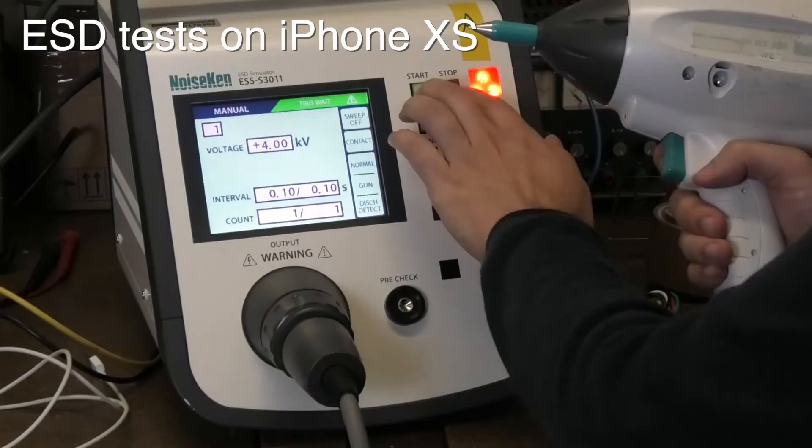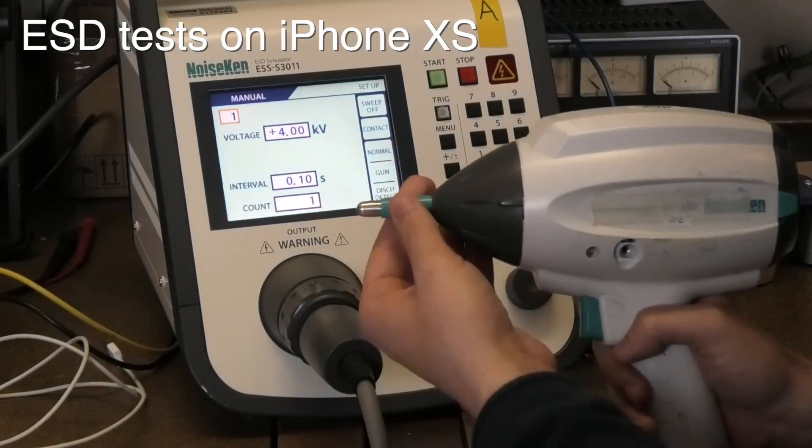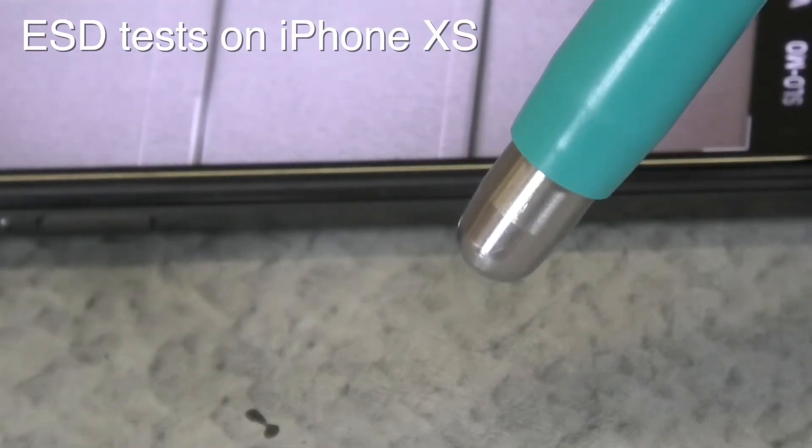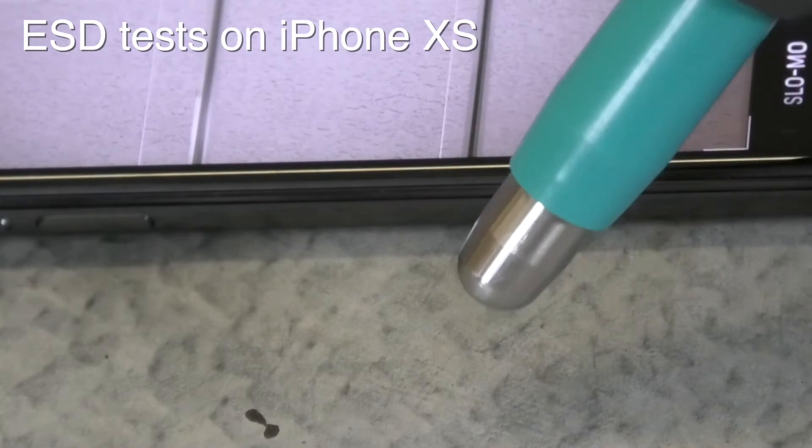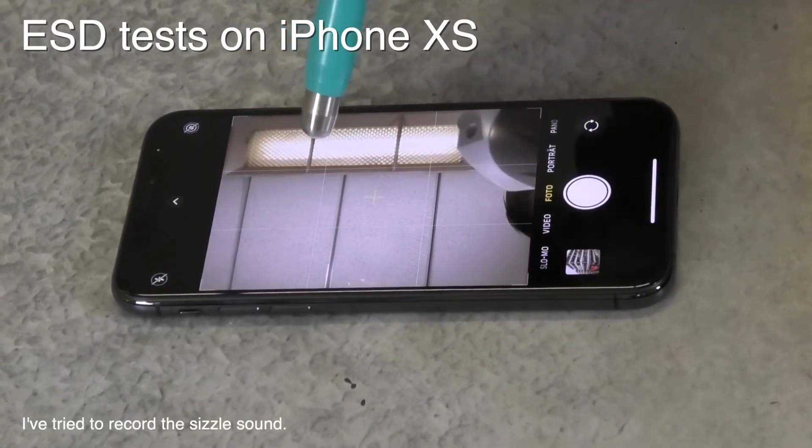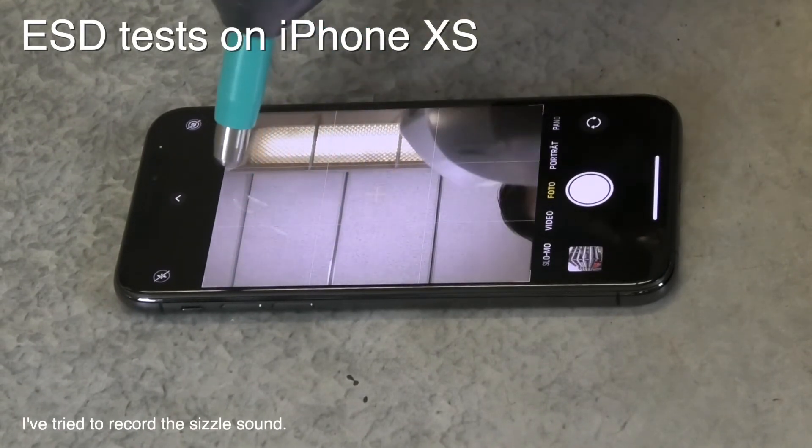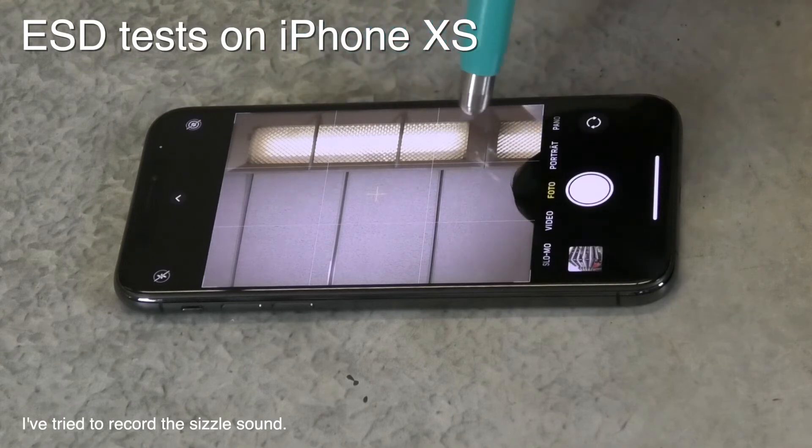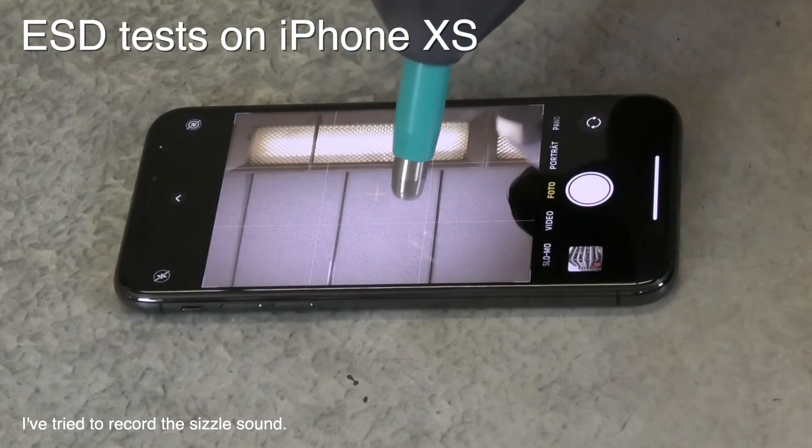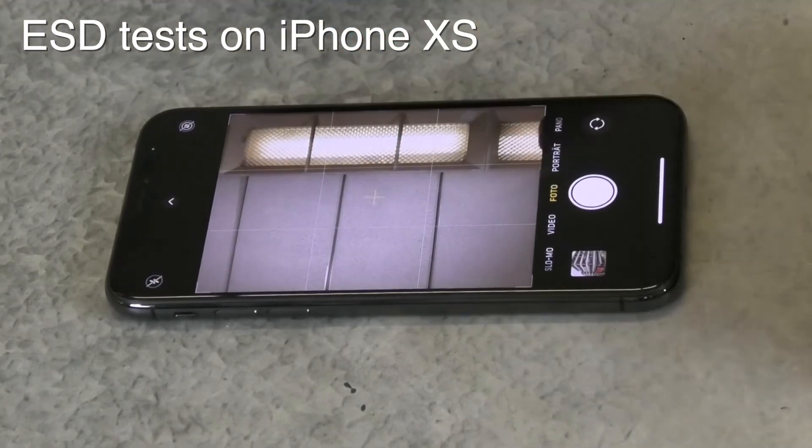Test number 3. Air discharges. Let's therefore switch back to the round tip and increase the voltage to 8kV. Here you can see again the discharge on the metal plate. I just don't want to scratch my phone. That's why I am a little more careful here.